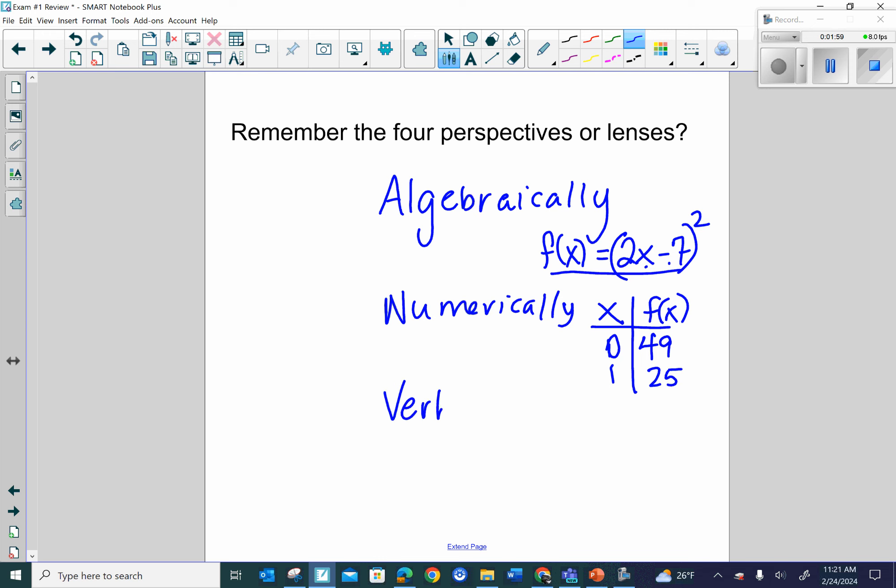Verbally, perhaps this function means something in a situation, or I could say what's going on in the function is I double all inputs, subtract 7, and then square. That's a good way to think about functions, as a verb. What does this function do to any inputs? Doubles, subtract 7, and squares.